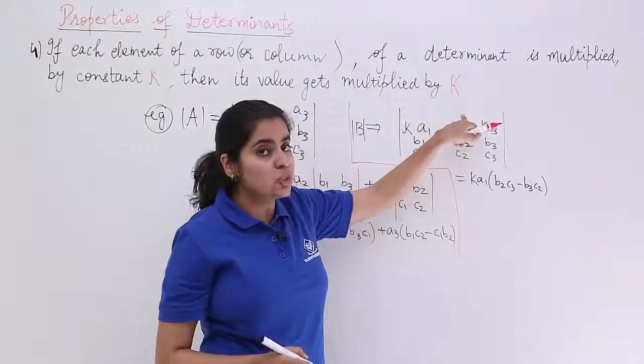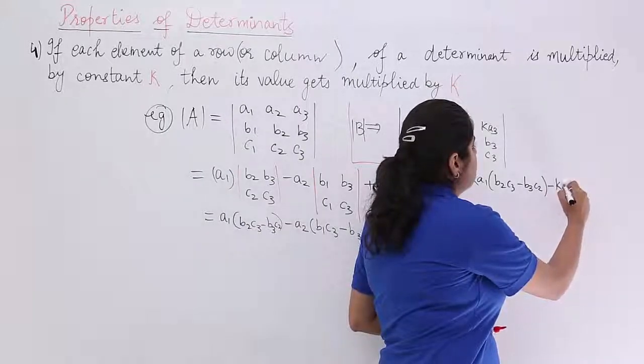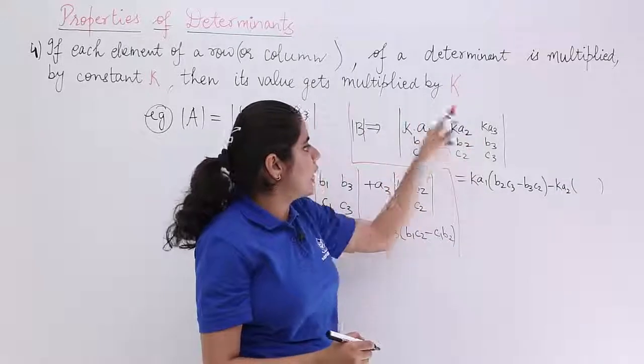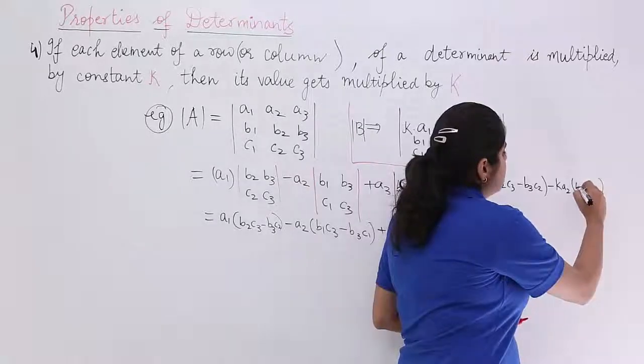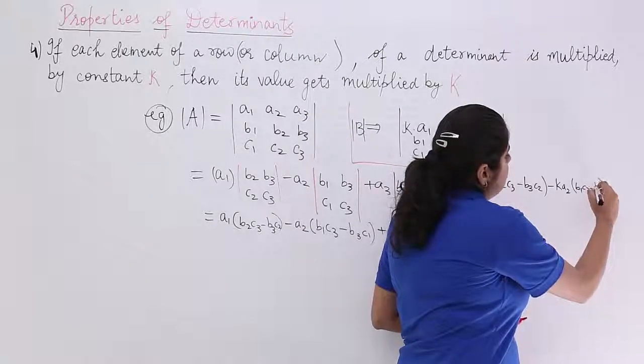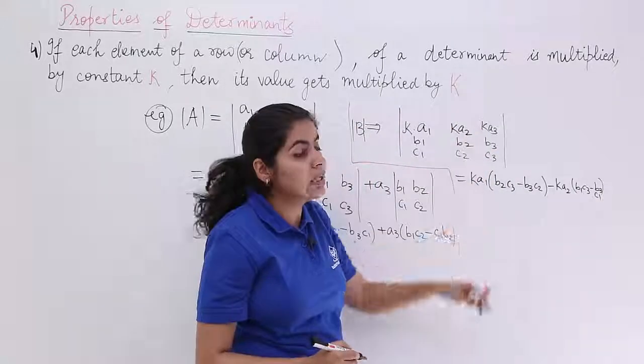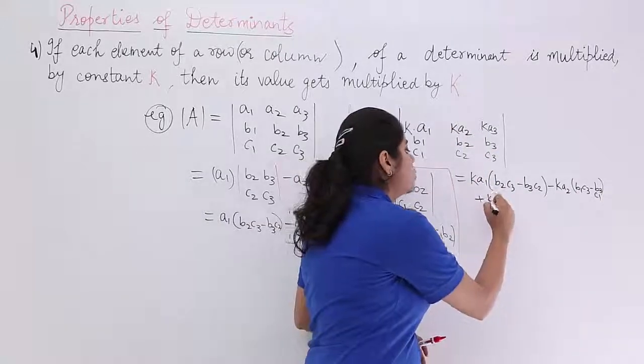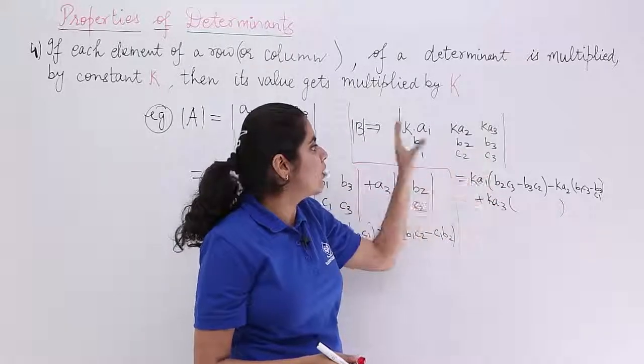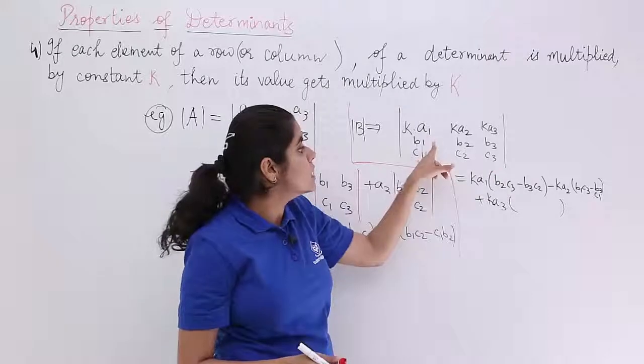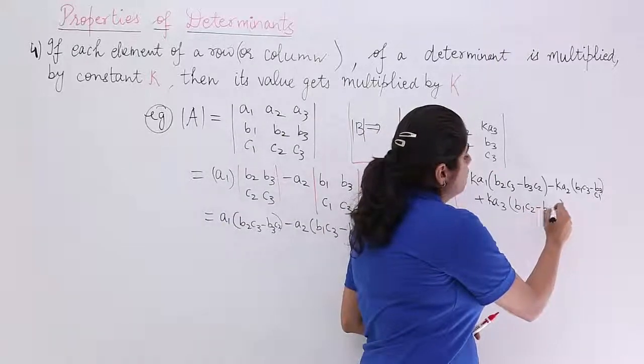Then, this is Ka2. It is plus, minus, plus. So, it is minus Ka2. Inside, what will happen is cross multiply, B1, C3 minus B3, C1. So, it is B1, C3 minus B3 into C1. Last but not the least, what I have is the third element which is Ka3. So, it is plus Ka3. Inside what you have? Inside you have after eliminating certain things. B1, C2, B2, C1. So, it is B1, C2 minus B2, C1.